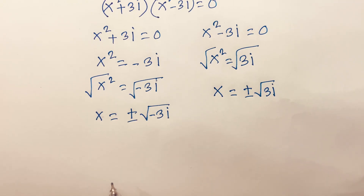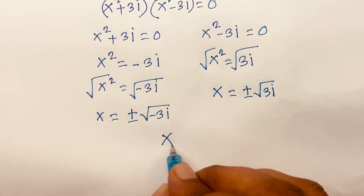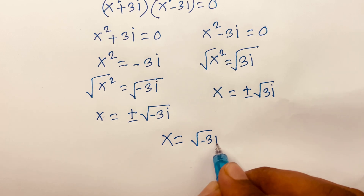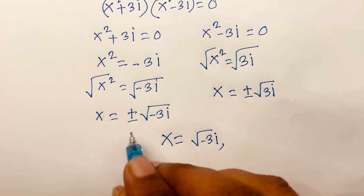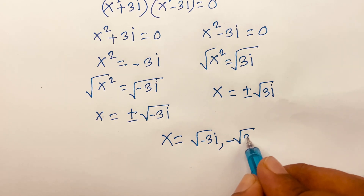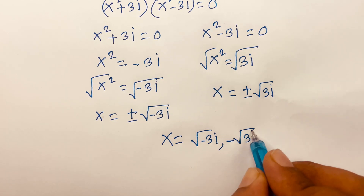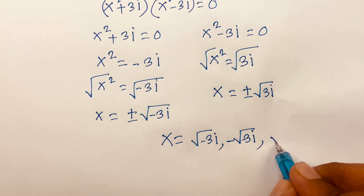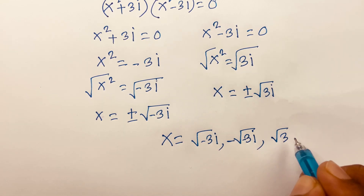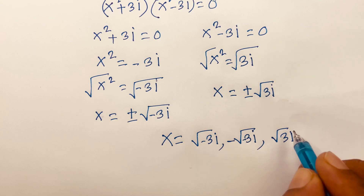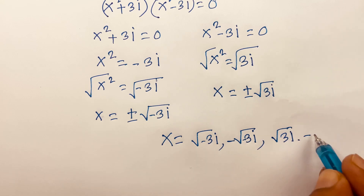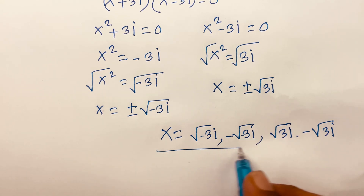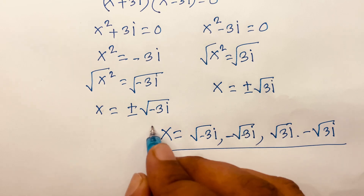So our answer is x is equal to plus or minus square root of minus 3i and plus or minus square root of 3i. This is our final answer.